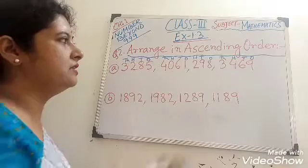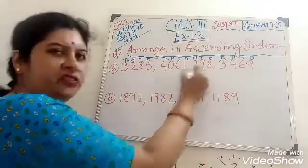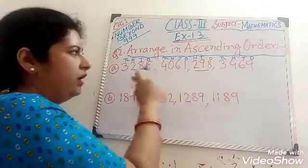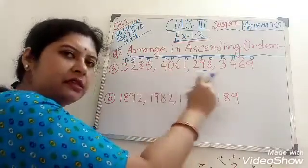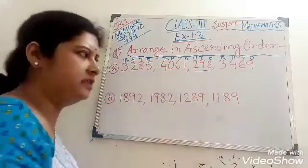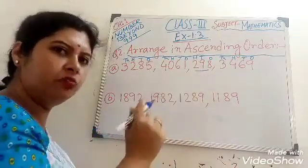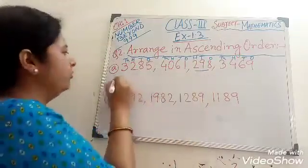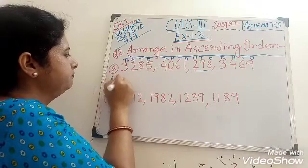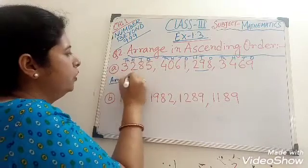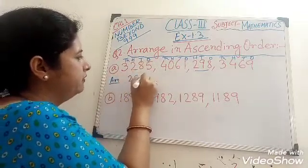In this case, this number is only 3 digits and all other numbers are 4 digits. So the 3-digit number is smaller, so we write it down first: 298.